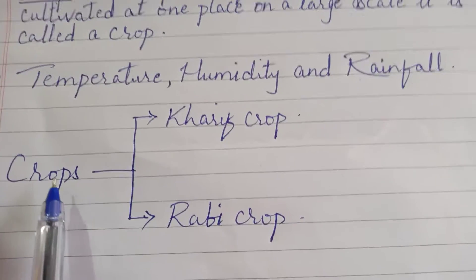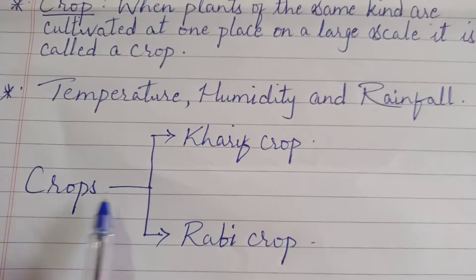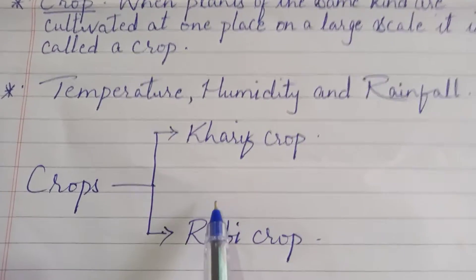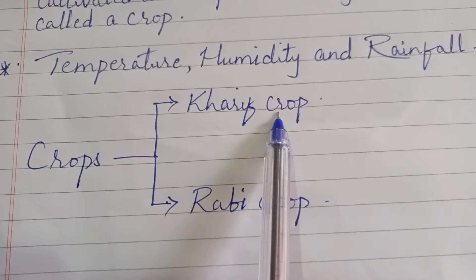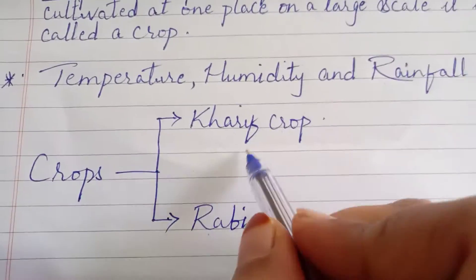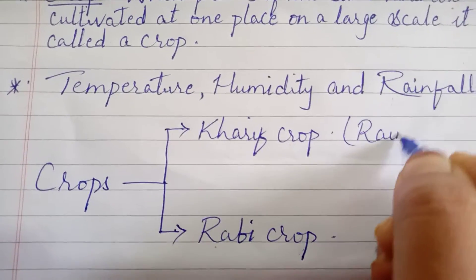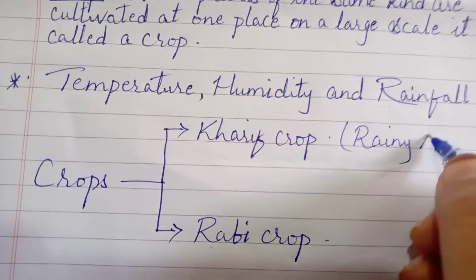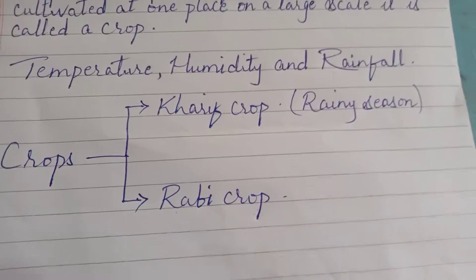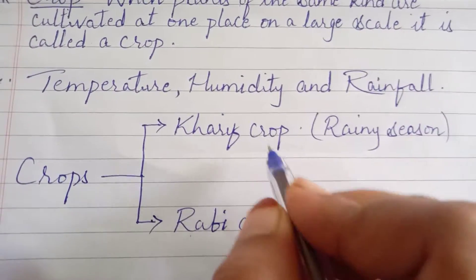Crops, whatever plants we grow on a large scale, have been classified into two main patterns: Kharif crops and Rabi crops. Let's look at them one by one. Kharif crops are nothing but the crops that are grown in the rainy season.